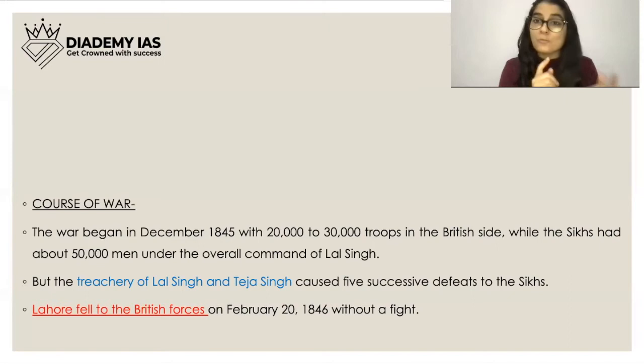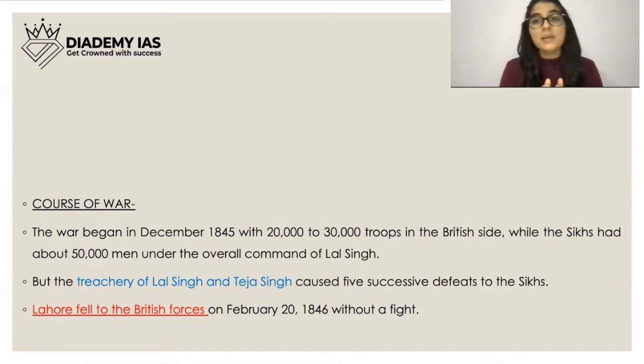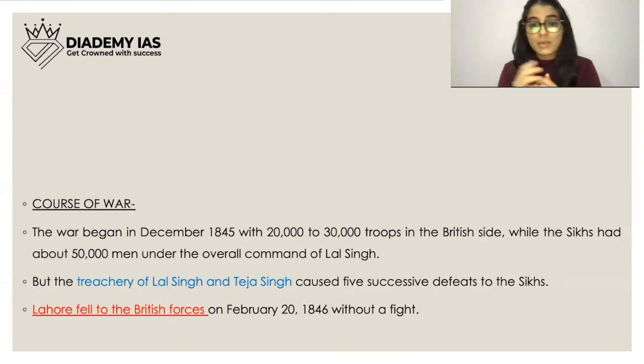This is similar to what happened in the Battle of Plassey, where Mir Jafar and Omichand betrayed Nawab Siraj-ud-Daulah, allowing the British to win very easily. Similarly here, Lal Singh and Teja Singh went against their own people and favored the English, which is why Lahore fell to the British forces.